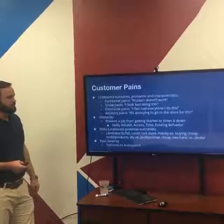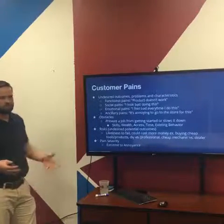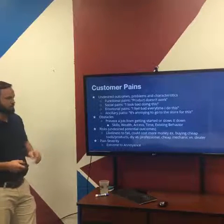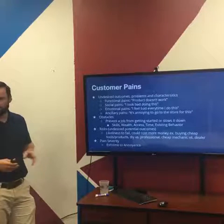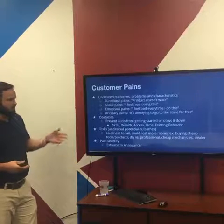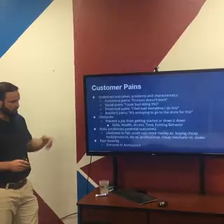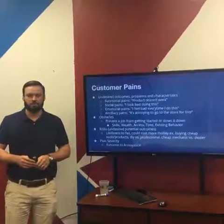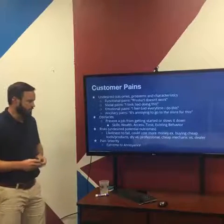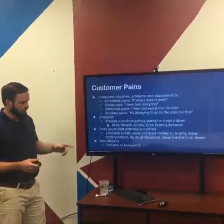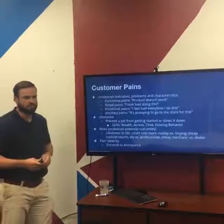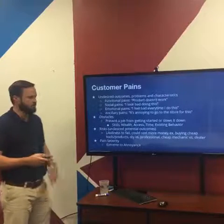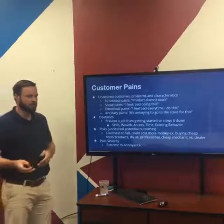When looking at customer pains: functional pains are things like the product doesn't work; social pains are that somebody looks bad using it; emotional pains are feeling bad every time you use it; ancillary pains would be things like it's annoying to go to the store for it. There may also be obstacles preventing a job from getting started — skills, wealth, access, time, existing behavior. Think about whether something prevents people from adopting your solution. Pain severity matters too — most people buy products to address one of their top two priorities. If it's not a big, severe problem, people aren't likely to spend much money on it.